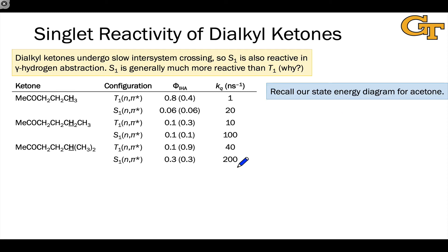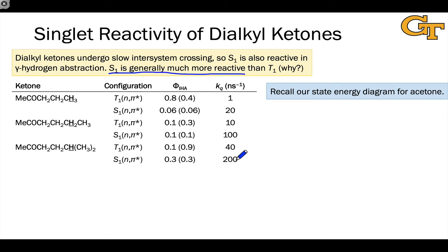In looking at singlet versus triplet reactivity, we can focus on dialkyl ketones whose singlet excited states have relatively long lifetimes due to slow intersystem crossing. S1 is also reactive in gamma hydrogen abstraction along with T1, and in these dialkyl ketones the rate constant of quenching of the singlet state is much higher than that of the triplet state, implying that S1 is generally much more reactive than T1.